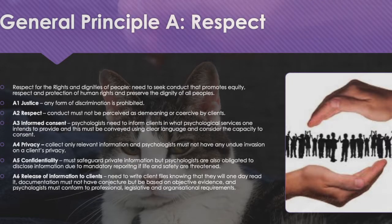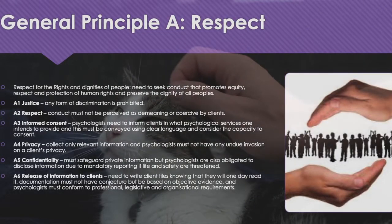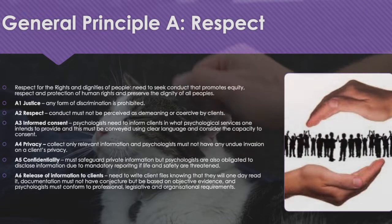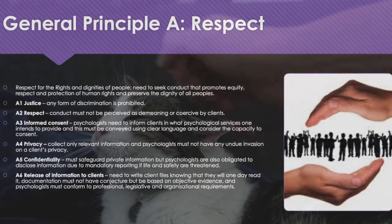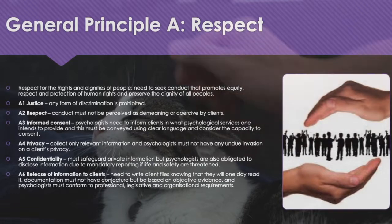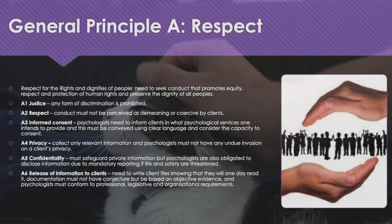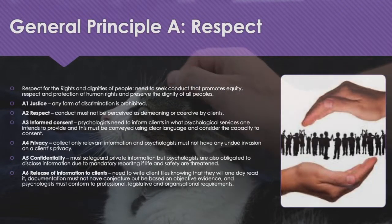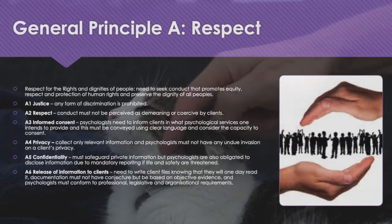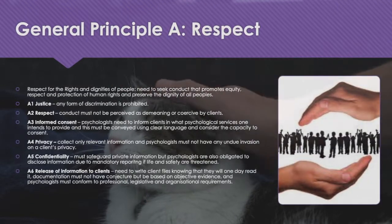General Principle A of the APS includes respect for the rights and dignities of people. One needs to seek conduct that promotes equity, respect, and protection of human rights, and preserves the dignity of all peoples. A1 is Justice — any form of discrimination is prohibited. A2 is Respect, whereby conduct must not be perceived as demeaning or coercive by clients. A3 is about Informed Consent, whereby psychologists need to inform clients of the psychological services they intend to provide, conveyed in clear language and considering the individual's capacity to consent. For example, children cannot consent because they do not have the capacity to grasp what consent is or what exactly is being done.